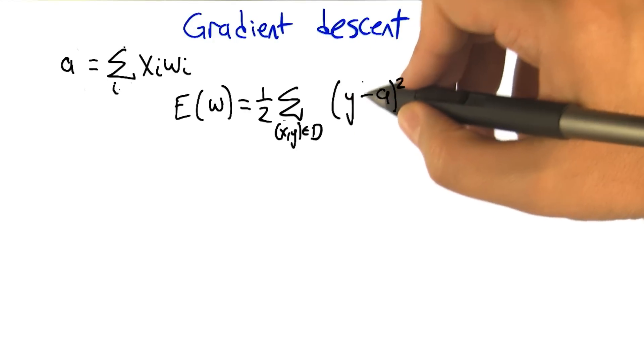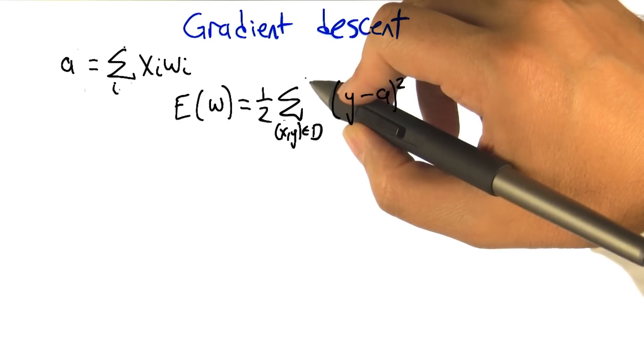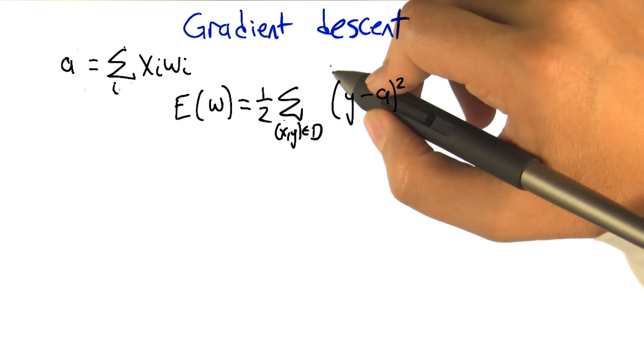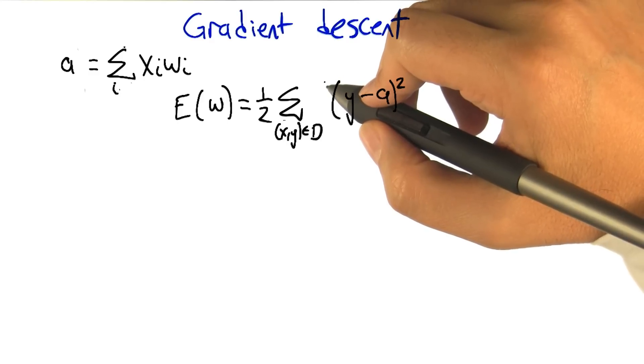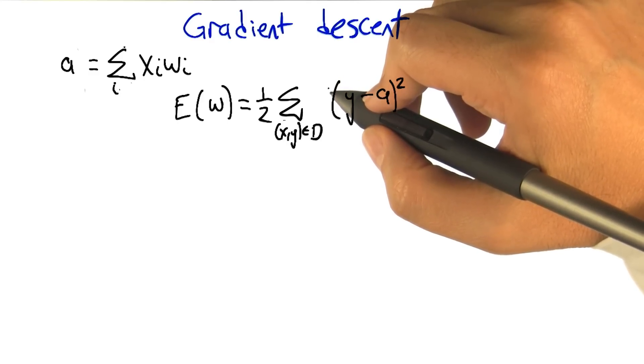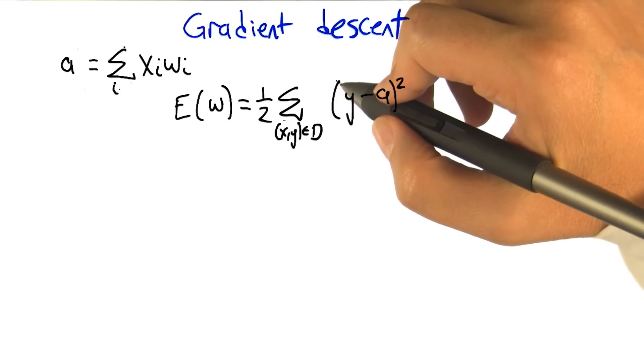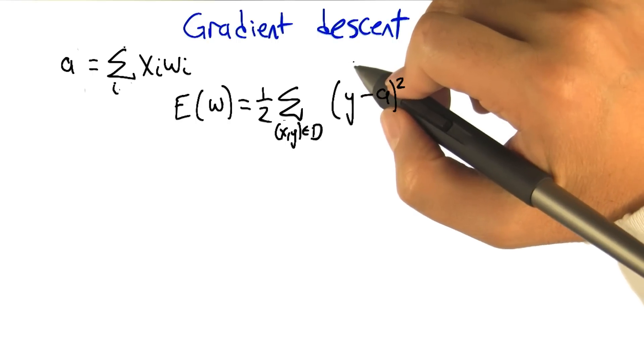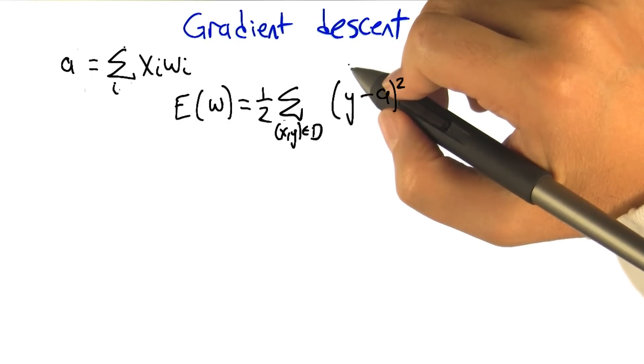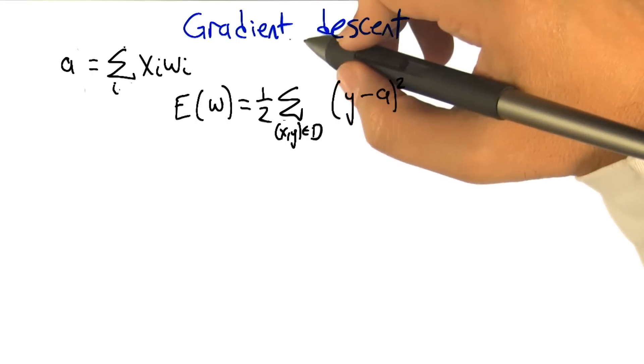So we're going to need a learning algorithm that is more robust to non-linear separability, or non-linear non-separability. Does that sound right? Non-linear separability. Non, left parenthesis, linear separability, right parenthesis. There you go. That's right, negating the whole phrase. Very good.